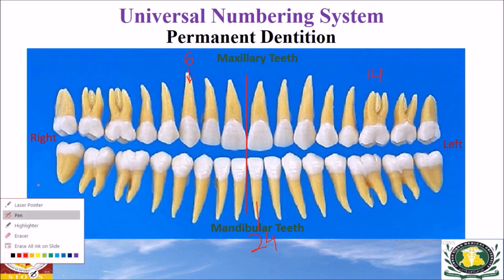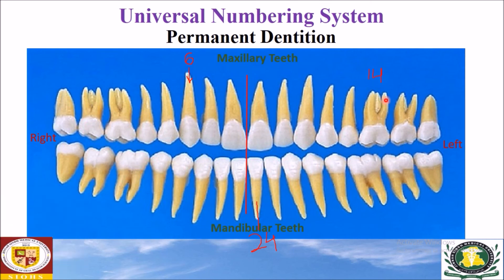Continuing from 14: 15, 16, then in a clockwise direction 17, 18, 19, 20 for the second premolar, 21 for the first premolar, 22 for the canine, 23 for the lateral incisor, and 24 for the central incisor of the left side.